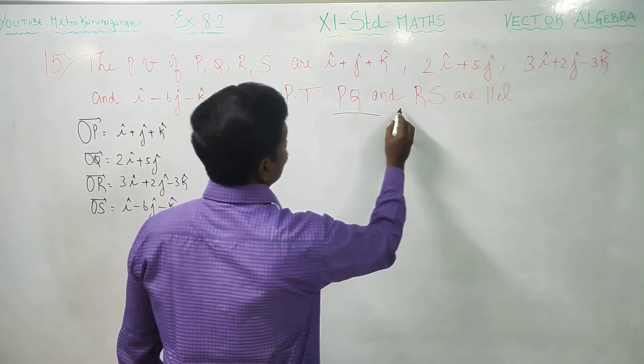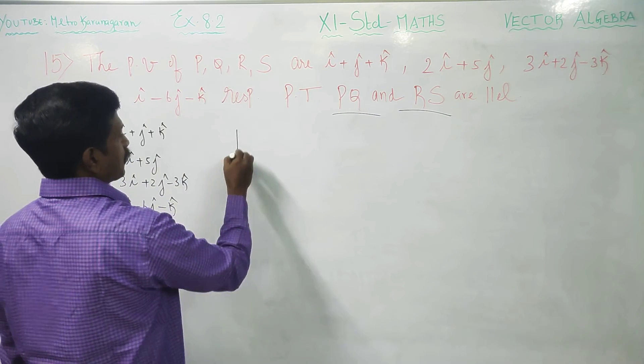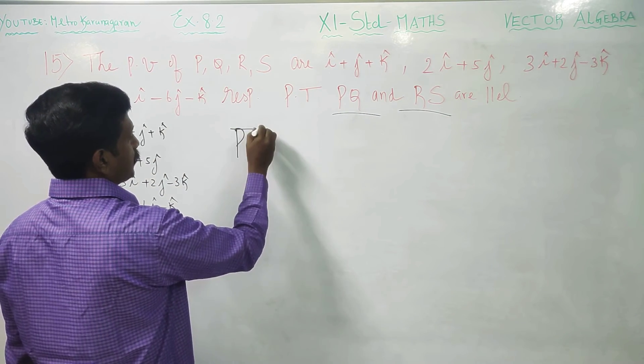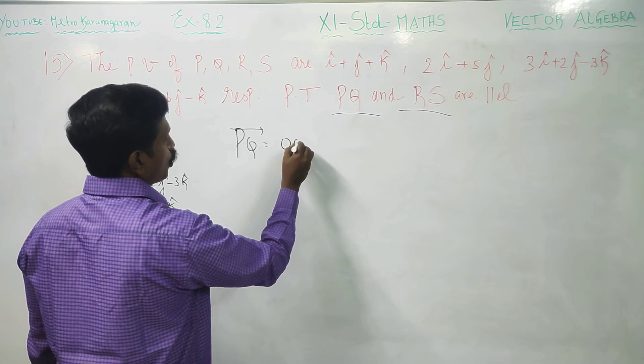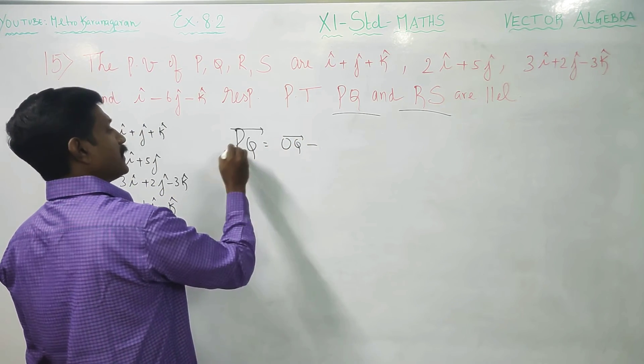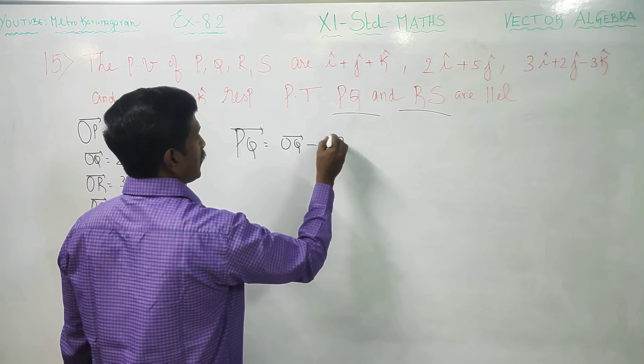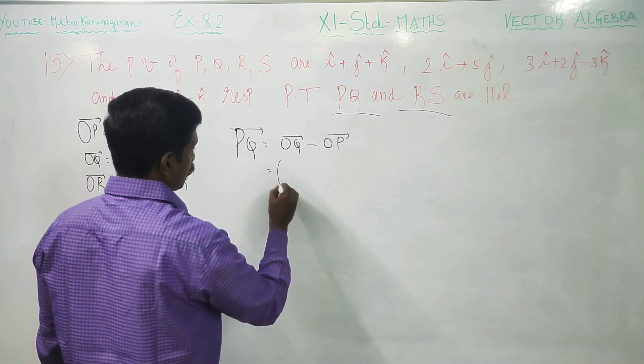Now, they are very much interested in PQ and RS. Therefore, I am going to find PQ vector. PQ vector is OQ vector, that is terminal point minus starting point, OP vector.